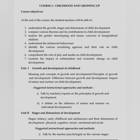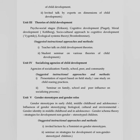Emotional and Social. Unit 3 is Theory of Child Development: Psychosocial Stage — Erikson; Cognitive Development — Piaget; Moral Development — Kohlberg; Sociocultural Approach to Cognitive Development — Vygotsky; Ecological System Theory — Bronfenbrenner. Unit 4 is Socializing Agency of Child Development. Agency of Socialization: Family, School, Peer and Community.